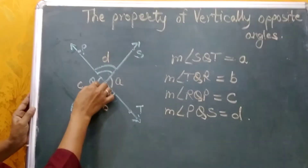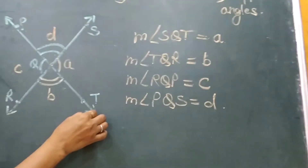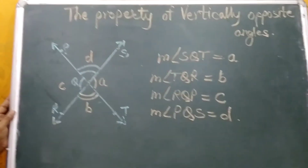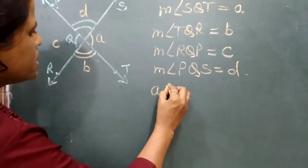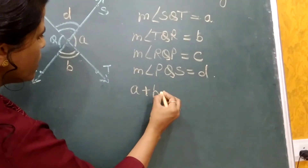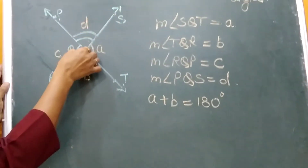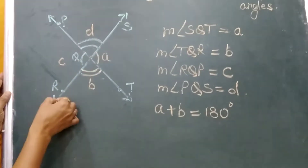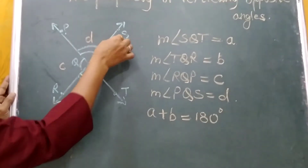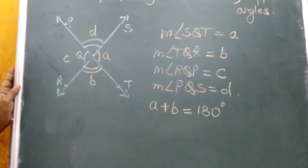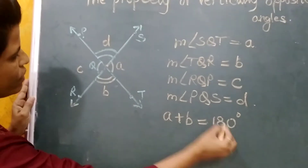Line SQR is a straight line in which QT is a common ray, so it is a linear pair. Therefore A plus B is equal to 180 degrees. Because line SQR is a linear line and QT is its arm, they form supplementary angles — so A plus B equals 180 degrees.